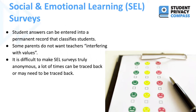Social and emotional learning surveys pose unique concerns, as many times questions in SEL surveys can result in students revealing personal and sensitive information about themselves. These answers can then be entered into a permanent record that classifies students — for example, flagging answers for potential behavior issues or safety concerns. In addition, some parents don't want teachers to interfere with values and don't feel comfortable with teachers asking about the social-emotional aspects of their child's lives, which can feel very personal. Lastly, it's difficult to make SEL surveys truly anonymous, as answers can often be traced back to individual students because of the personal information given in their responses.